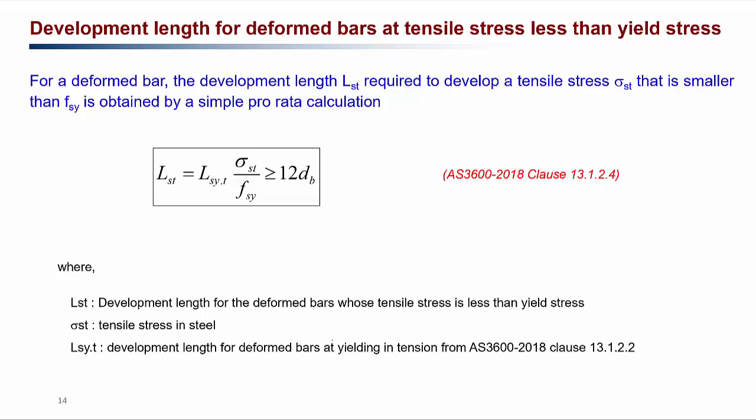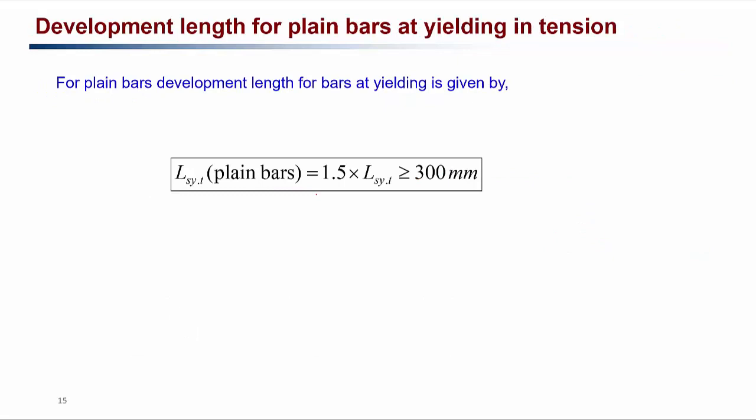For tension reinforcement with stress less than the yield stress, we can calculate the development length on a pro-rata basis. For example, at the support of a simply supported beam, the tensile stress is less than the yield stress, so we can reduce the development length proportionally based on the actual stress. The development length must be greater than 12 times the diameter of the bar as a minimum.